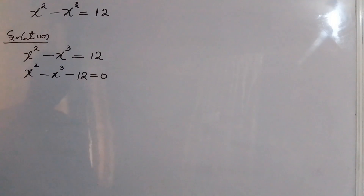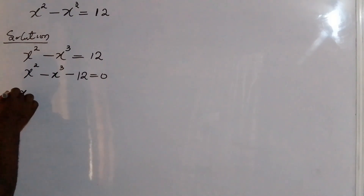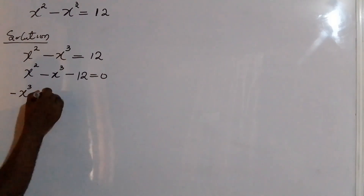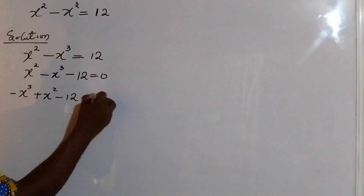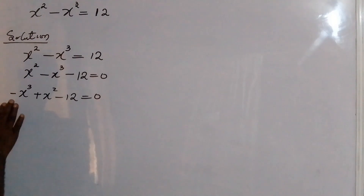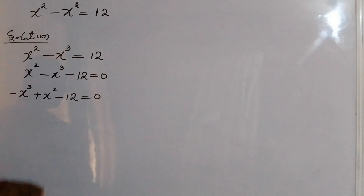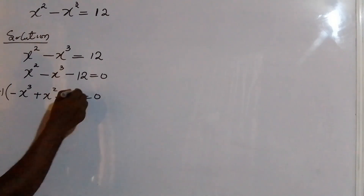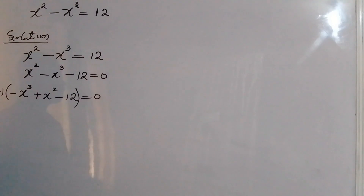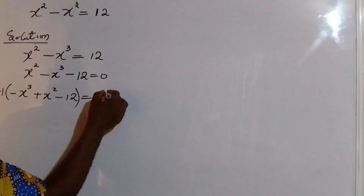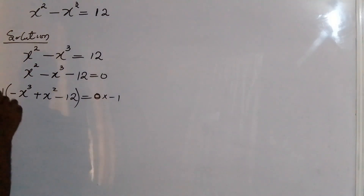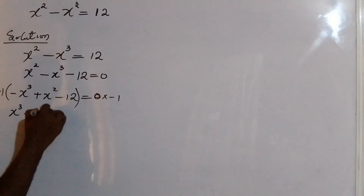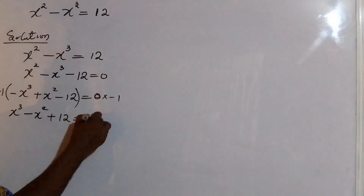This is now in standard cubic form, equal to 0. I'm going to rewrite this as negative x³ plus x² minus 12 equals 0. I don't want a negative coefficient on x³, so I multiply through by negative 1. What we now have is x³ minus x² plus 12 equals 0.